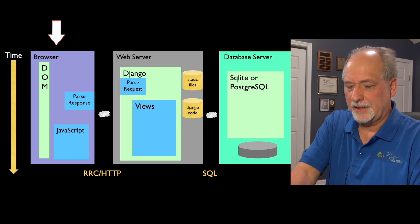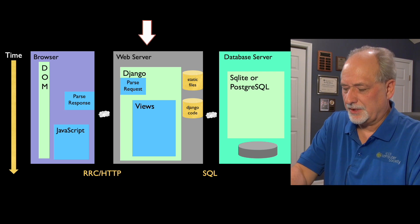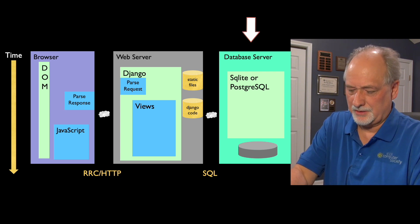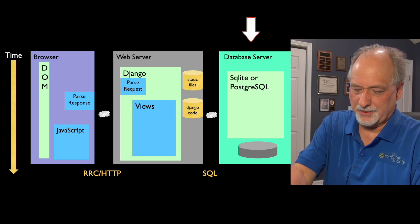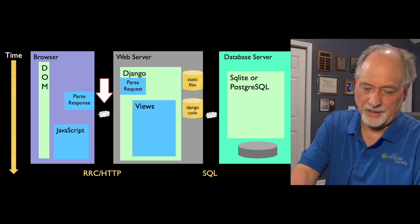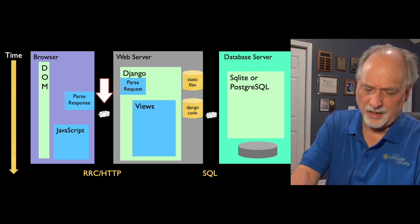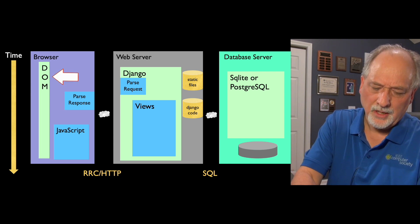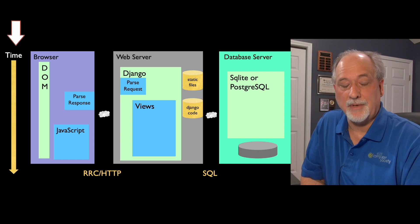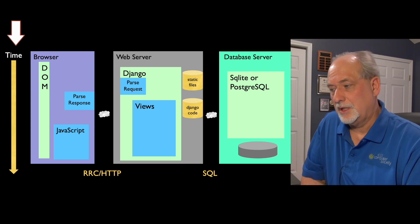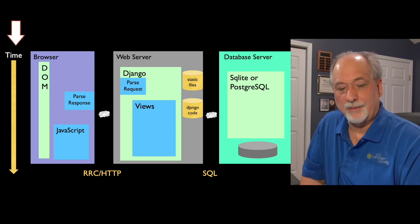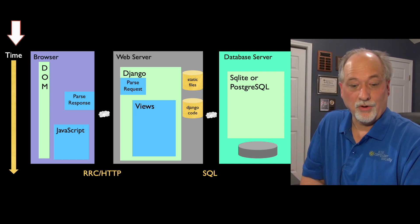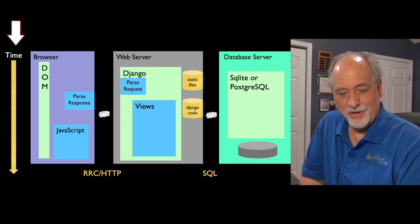We make a click, it goes across the network to the web server, runs some code, maybe talks to a database, formats up some new stuff and we get the response. Then HTML comes out and that's parsed to make the DOM — the document object model. We're going to ignore most of that in this lecture.